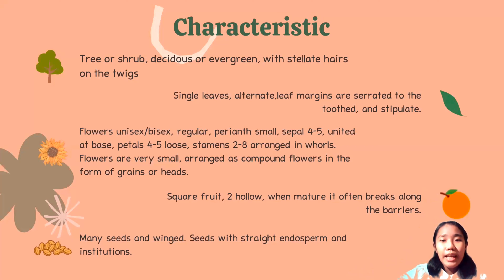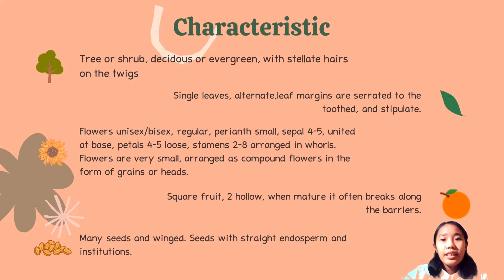Stamen 2 to 8, arranged inwards. Flowers are very small, arranged as compound flowers in forms of spikes or heads. Capsule fruit, 2 hollows, when mature it often breaks along the barriers. Many seeds with wings, seed with streaks, endosperm, and cotyledons.